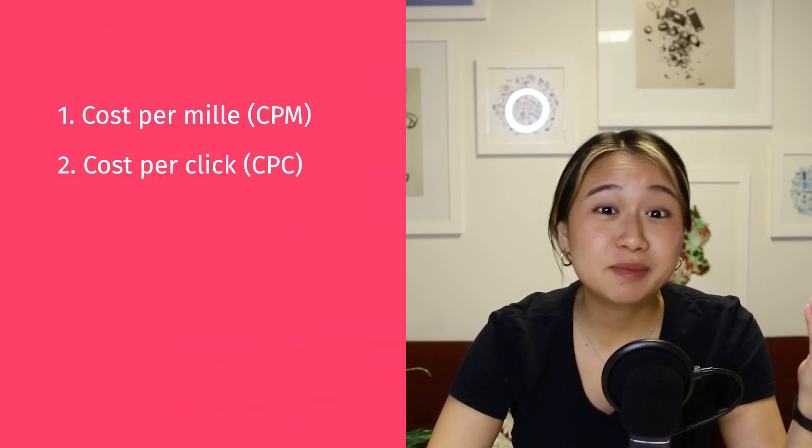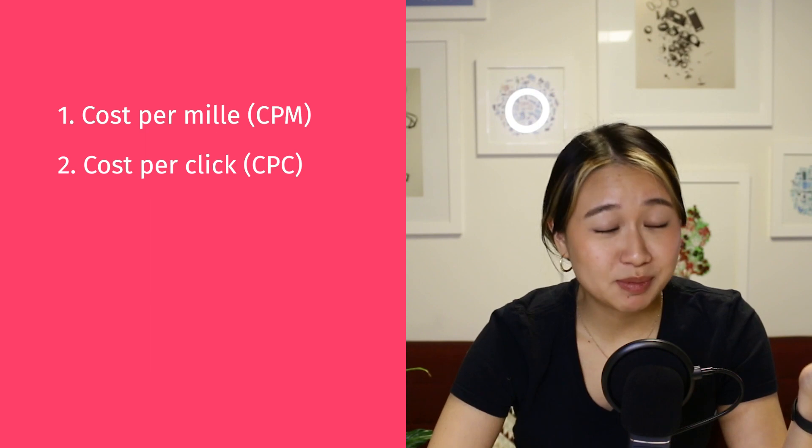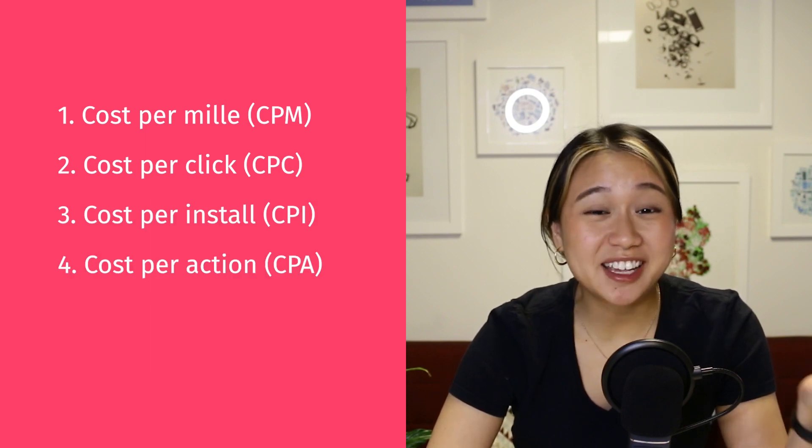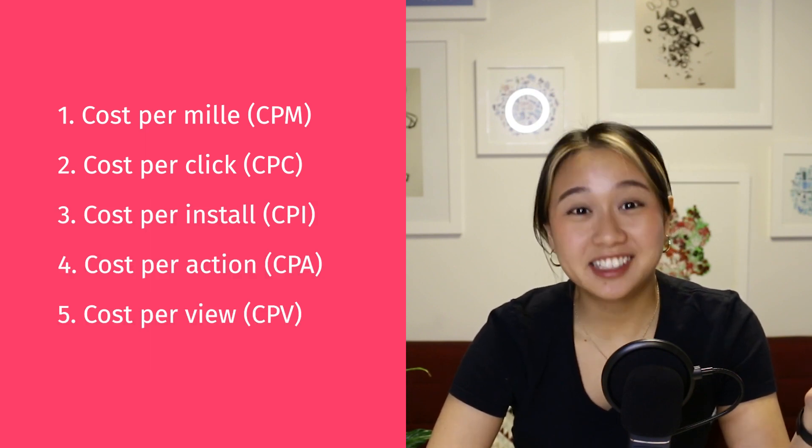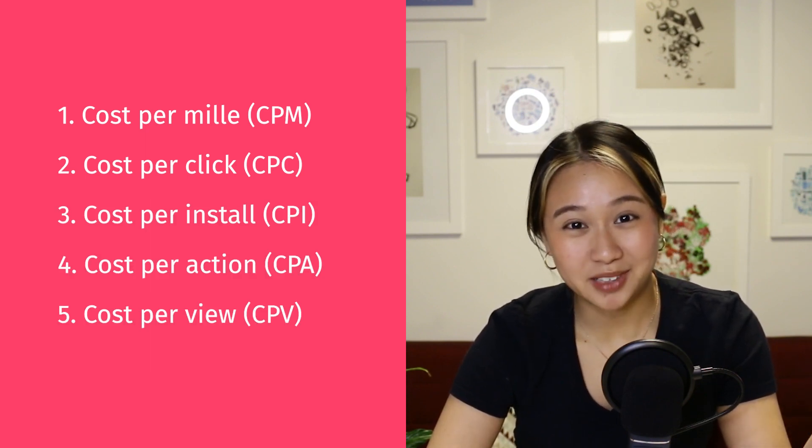These are the models that mobile ad networks use to measure and gauge the success of their mobile ad campaigns, so it's important that you're across them. They include CPM, CPC, CPI, CPA, and CPV.